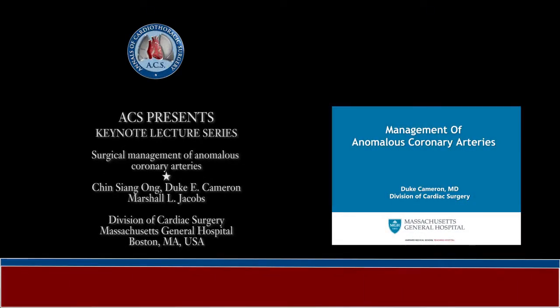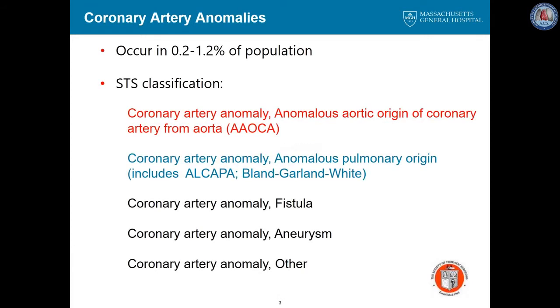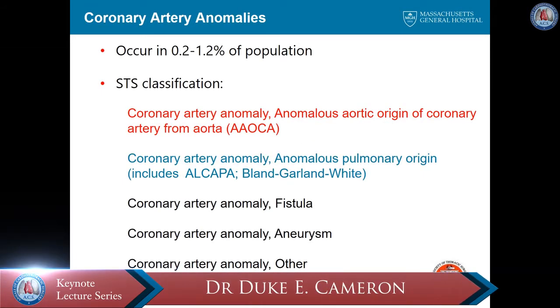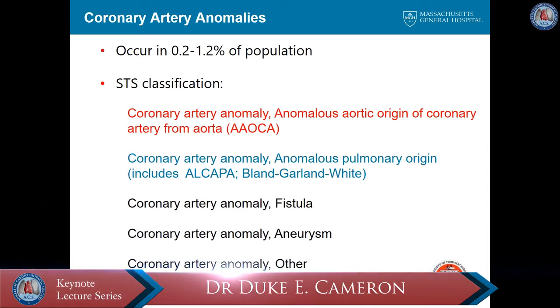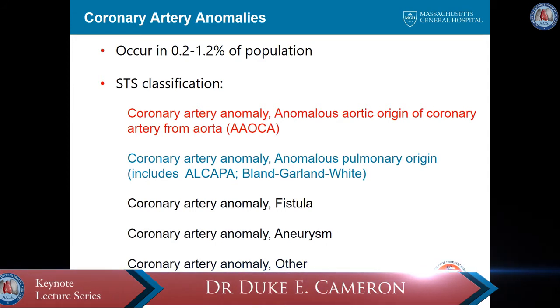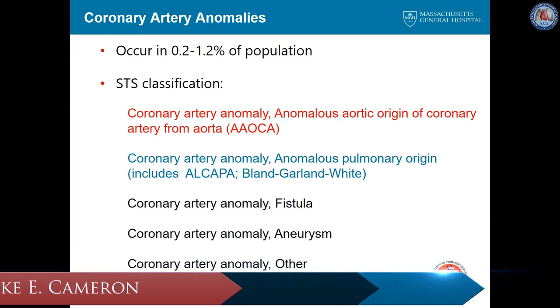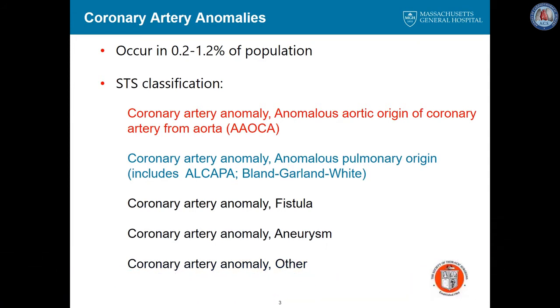Management of Anomalous Coronary Arteries. Coronary artery anomalies occur in between 0.2 and 1.2 percent of the population. There are several forms of coronary artery anomalies. The subject of this talk is anomalous aortic origin of the coronary arteries from the aorta, or AAOCA.